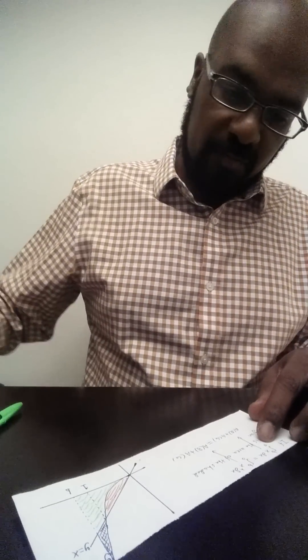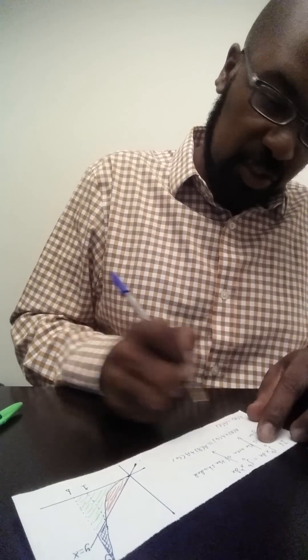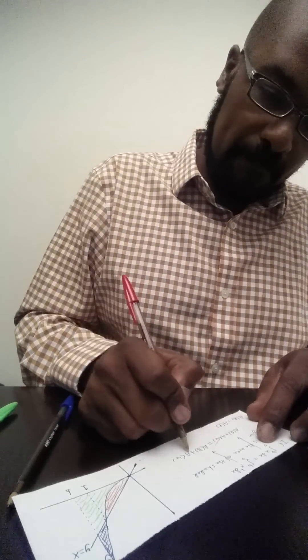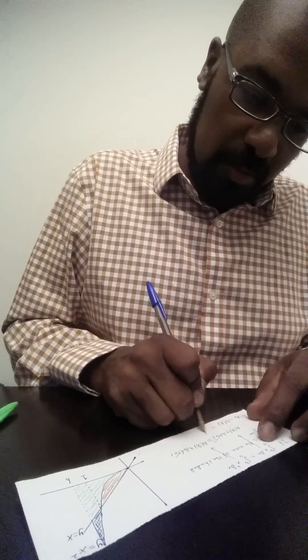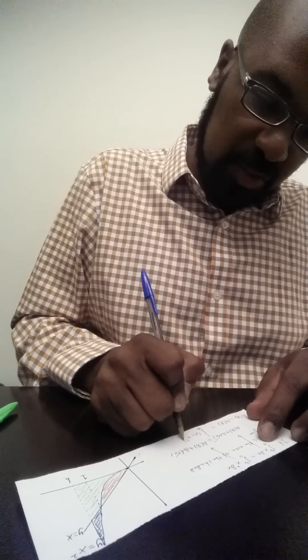So the area of our region in question, the blue region, is the area of the red region, which is the integral from 0 to 1 of x minus x squared dx.